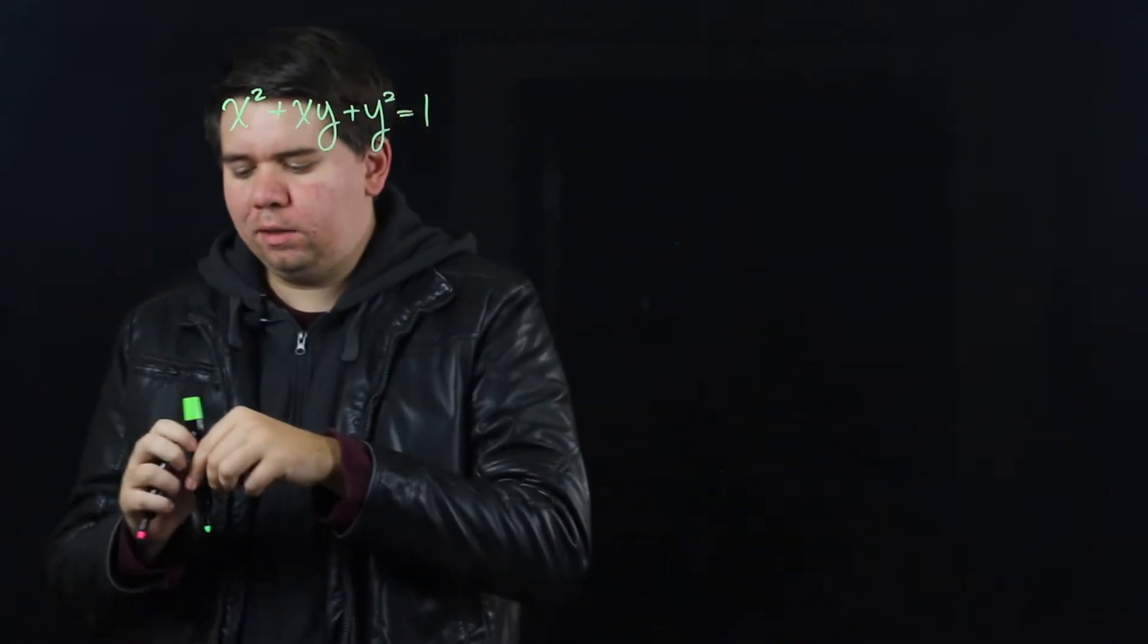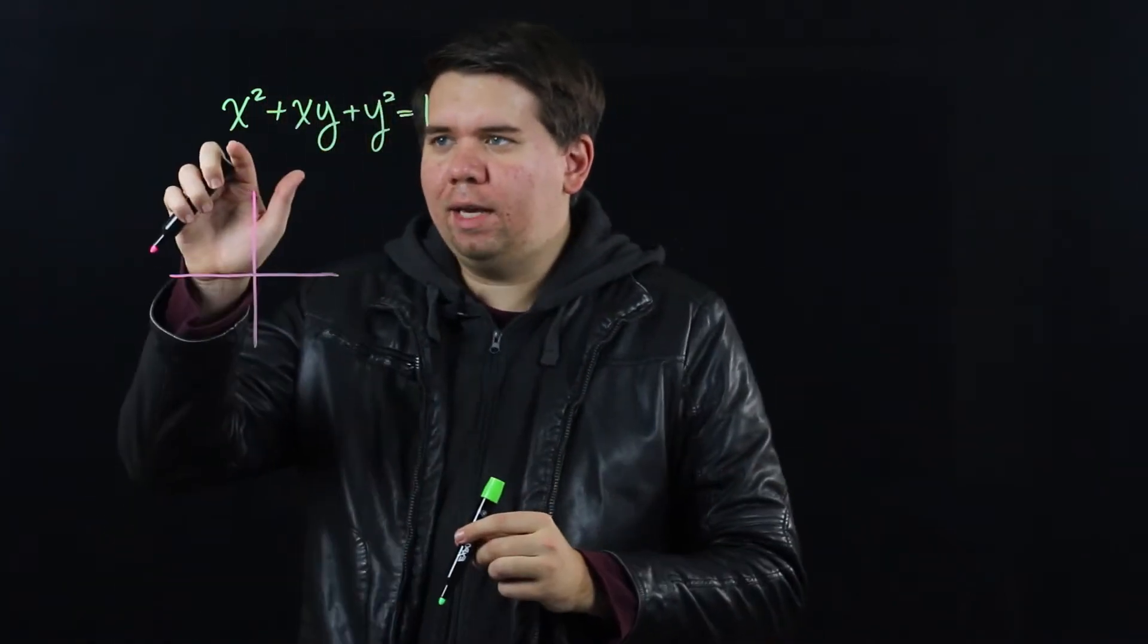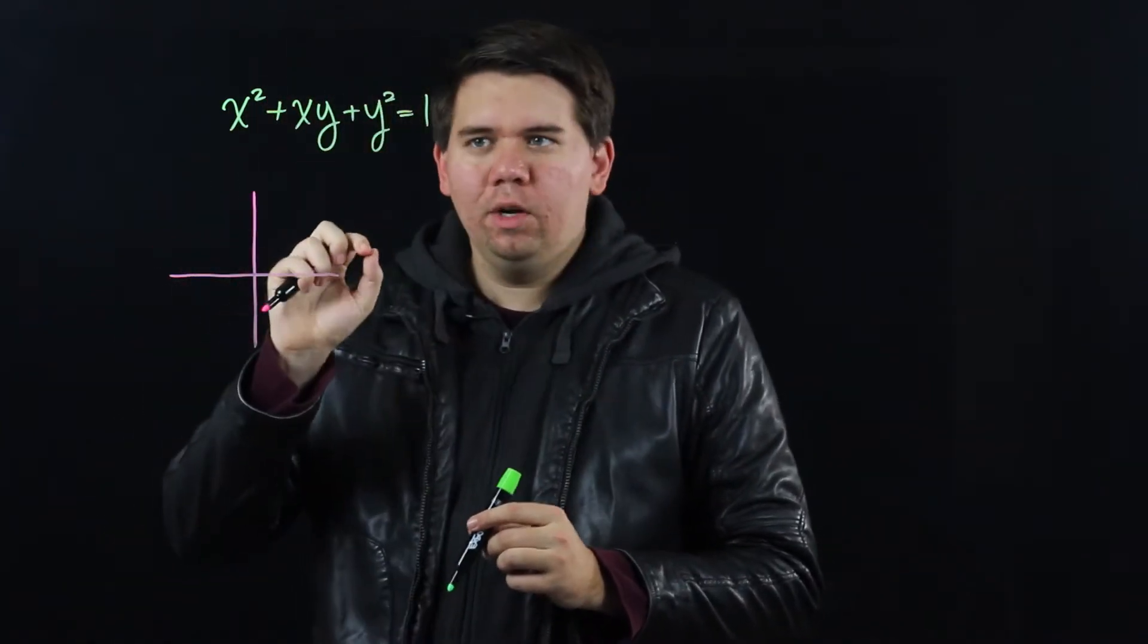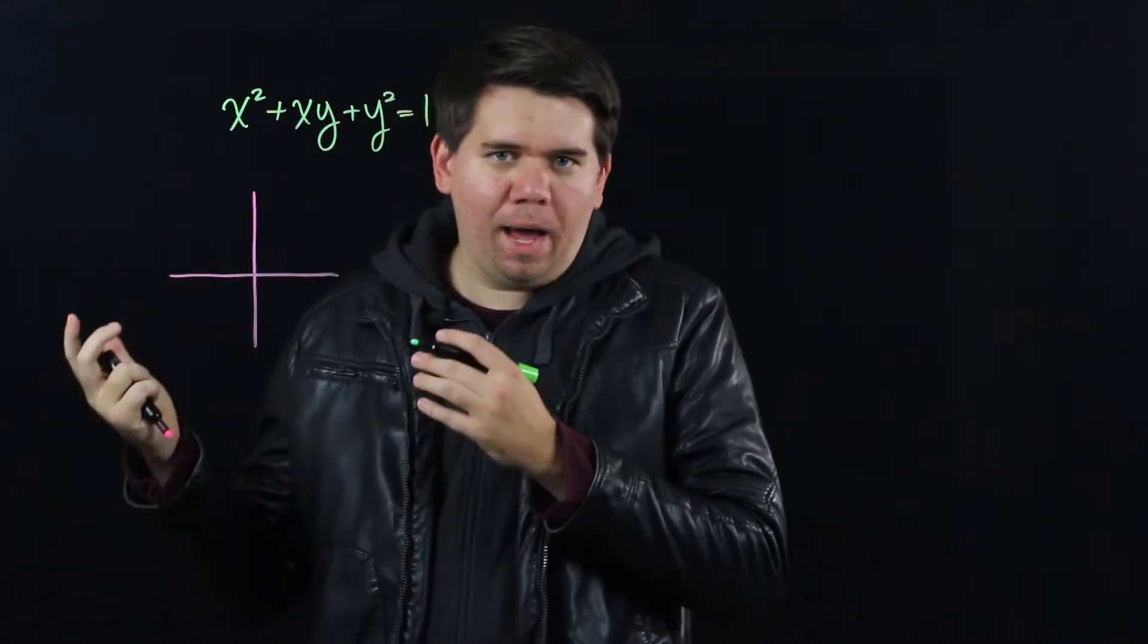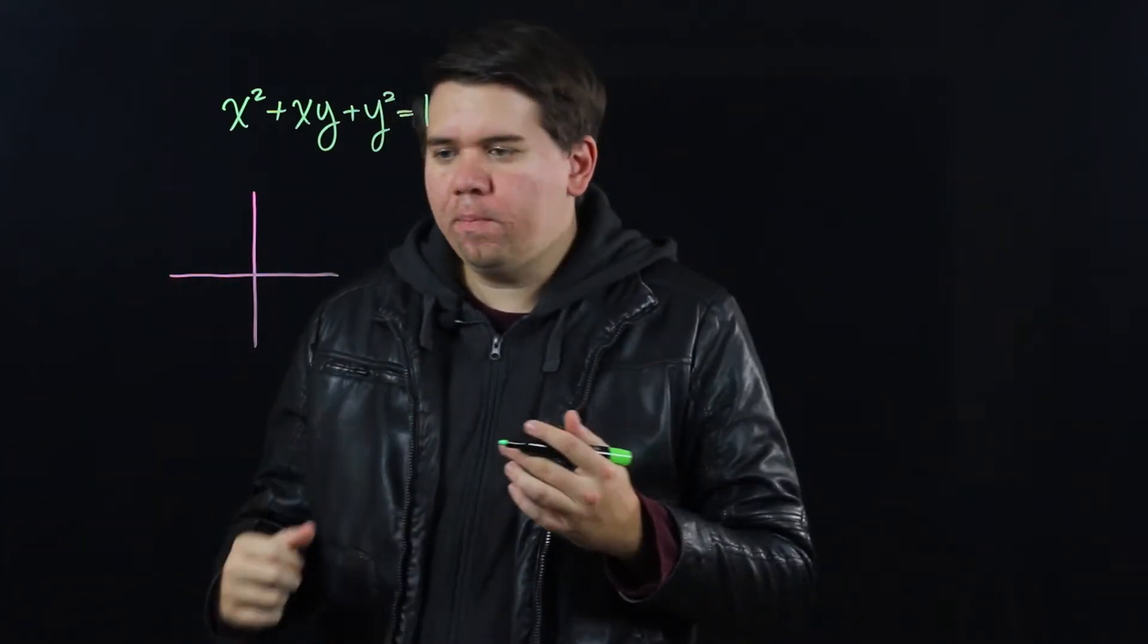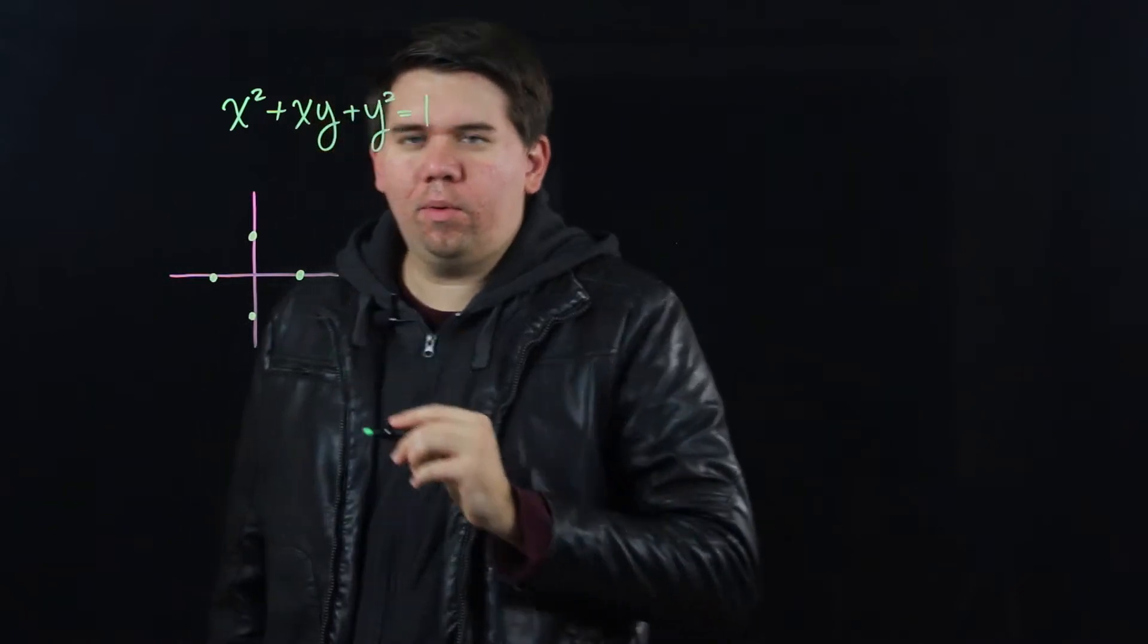If we start plotting some points, so you get an idea of what's on here, you could have, for example, x is 0 and y is 1, or y is 0 and x is 1, or one of them could be minus 1 and the other one could be 0. So you still have these four points, but we get some other points as well.